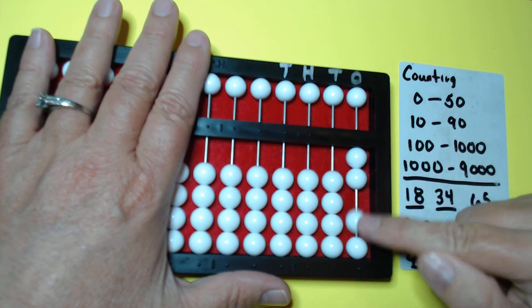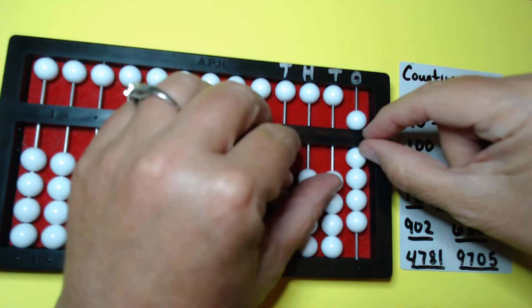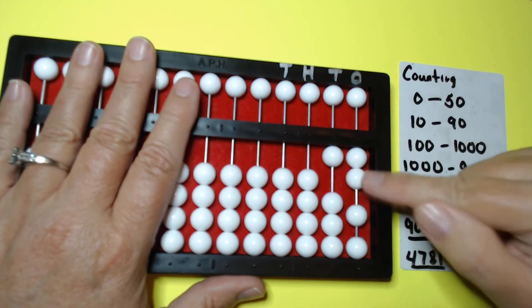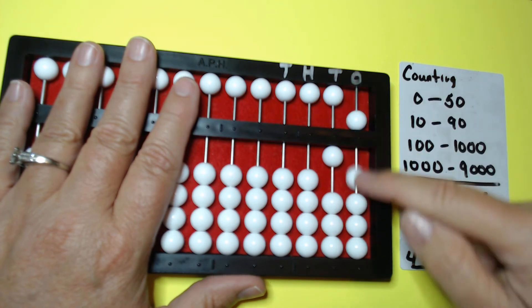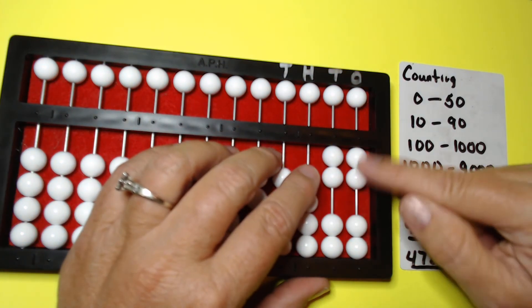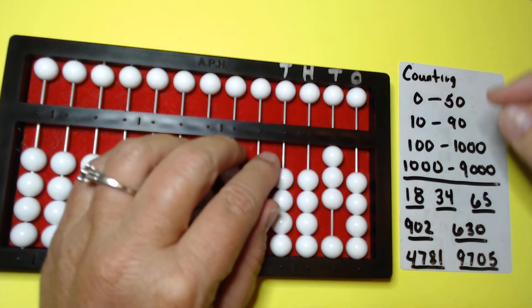So let's do that again without me talking and counting only. Zero, one, two, three, four, five, six, seven, eight, nine, ten. Then we can count on. Eleven, twelve, thirteen, fourteen, fifteen, sixteen, seventeen, eighteen, nineteen, twenty, twenty-one, twenty-two, twenty-three, twenty-four, twenty-five, twenty-six, twenty-seven, twenty-eight, twenty-nine, thirty.